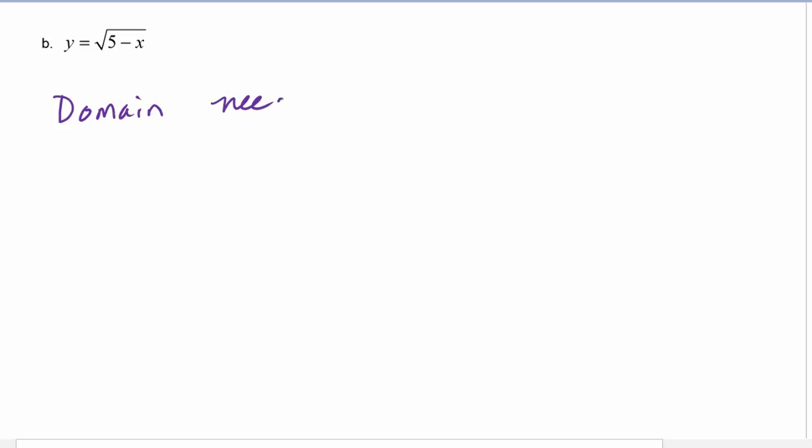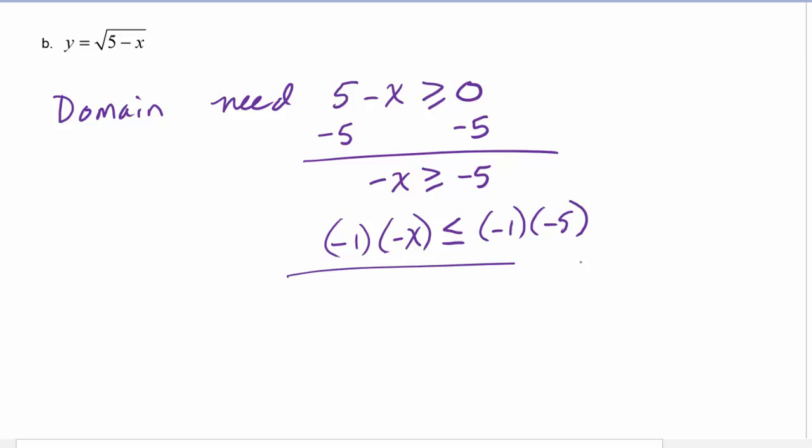We know that we need 5 - x to be greater than or equal to zero. Now if we solve this inequality for x, we can subtract five, subtract five, we have -x ≥ -5. Multiply by negative one. Now remember, if you multiply by negative one, you have to switch the inequality symbol. So this would become x ≤ 5, and that is our domain.